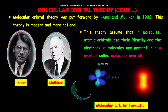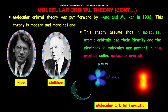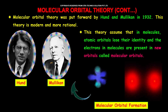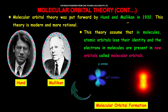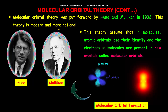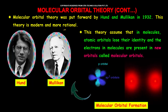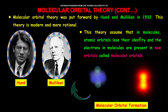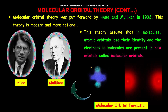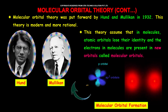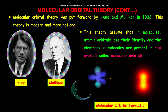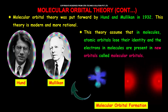The molecular orbital theory was put forward by the great scientists Hund and Mulliken in 1932. This theory is modern and more rational. This theory assumes that in molecules, atomic orbitals lose their identity and the electrons in molecules are present in new orbitals called molecular orbitals.